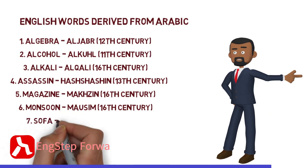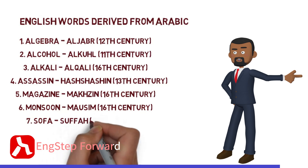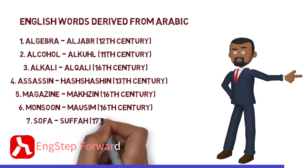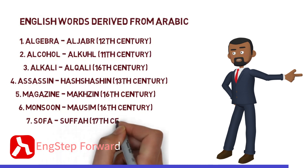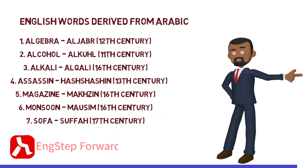Number 7: Sofa. Sofa is derived from Arabic, and became part of the English language in the 17th century.